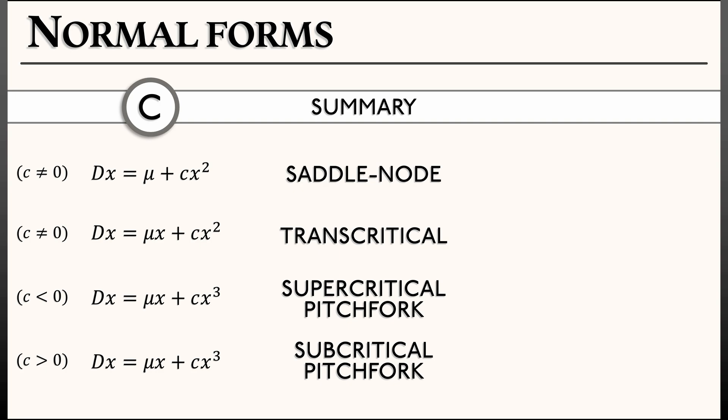Now, each and every one of these bifurcations has a discrete time version to it. To get the normal forms for those, what we're going to do is take the continuous time differentiation operator d and replace it with the discrete time differentiation operator delta, that forward difference.